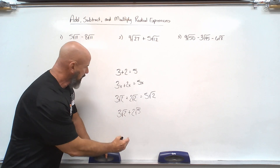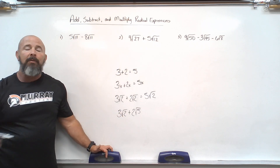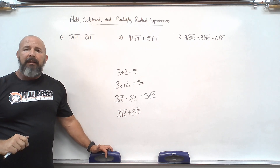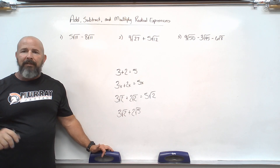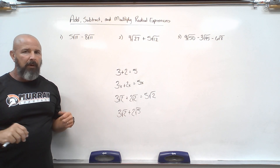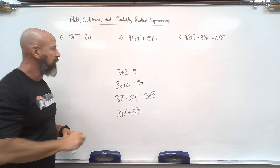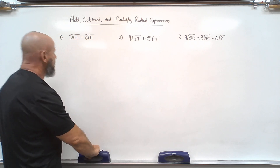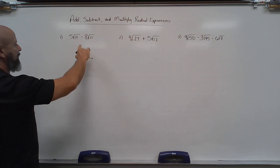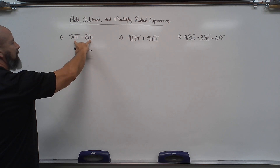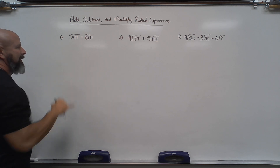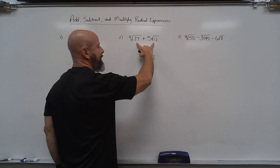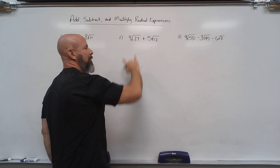I know these are all addition examples, but the same idea applies to subtraction — I need like terms to do subtraction also. Looking at the ones on the board, I can definitely see that these two have the same radical; both have a root 11. And then over here, these two definitely do not — that's a different square root.